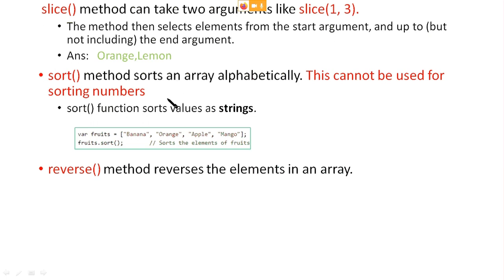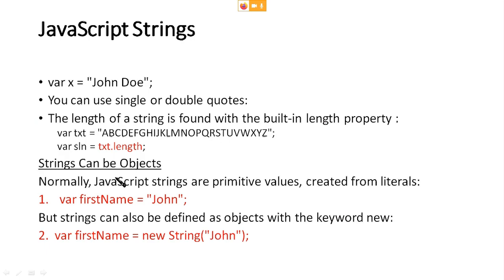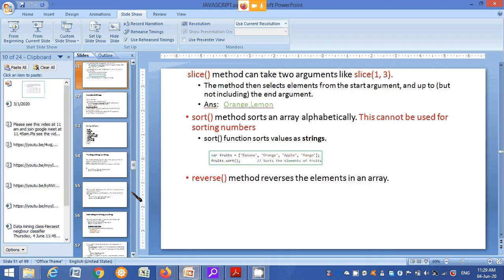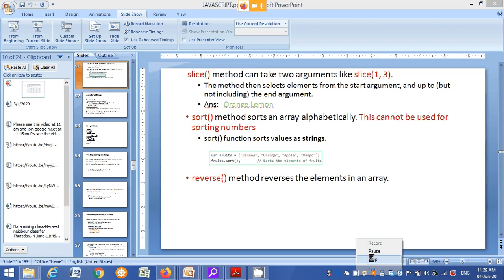Next is the sort method. The sort method sorts an array alphabetically. This function cannot be used for sorting numbers. For example, fruits is banana, orange, apple, and mango — fruits.sort will sort alphabetically, giving the result apple, banana, mango, orange. There is also a reverse method that reverses the elements in an array. In the next video, I will explain about strings.